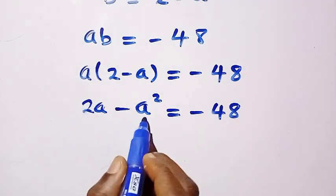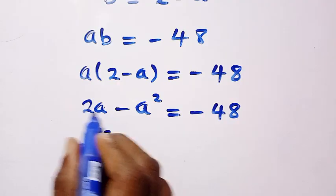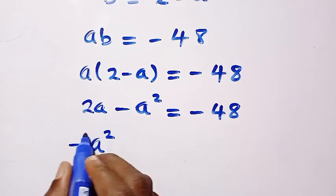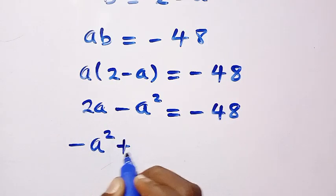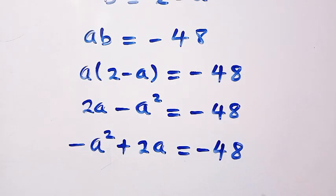Let's rearrange this. By rearranging this we have minus a squared - this is normal rearrangement, the sign will not change - and a is plus 2a equals minus 48.